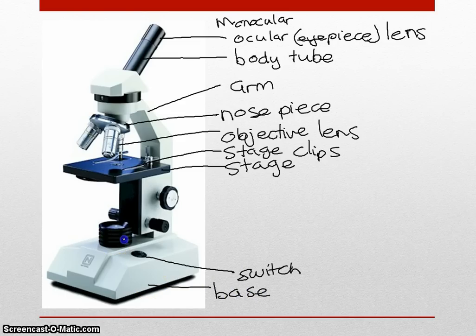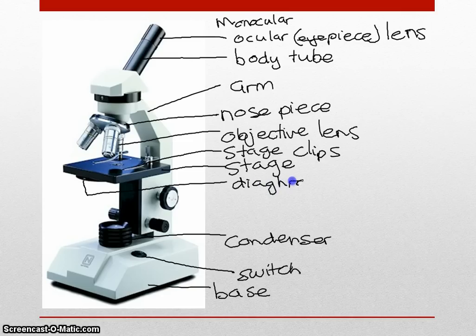It shines through this structure, which is known as the condenser. And you can see over there, that is the diaphragm, also known as the iris.